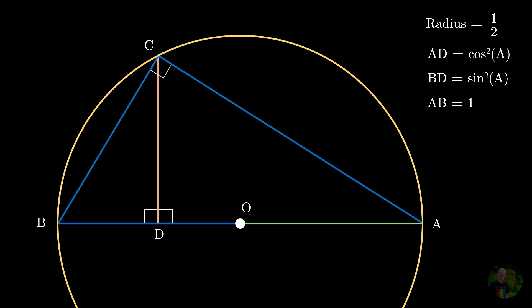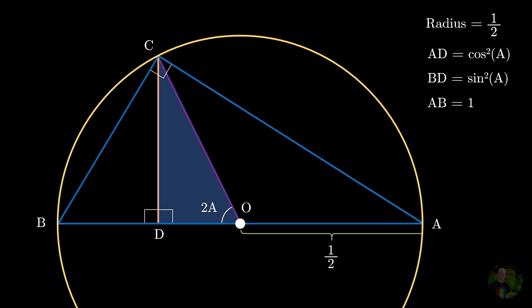So AD is same as AO plus OD. We know AO is the radius, which is 1 half. And to find OD, we will be drawing another line from C to O. And if you notice, there is a central angle and an inscribed angle standing on the same arc BC. And as the inscribed angle is angle A, the central angle will be 2 times A.